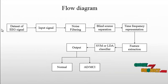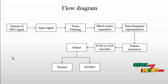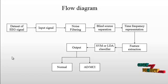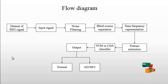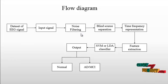Let us discuss the flow diagram of the process. The dataset of EEG signals has been taken, and the input signal is selected from the dataset. Electroencephalography records electrical activity of the brain. First, the input EEG signal is taken. Then, noise filtering is applied using the Butterworth filter to denoise the signal.